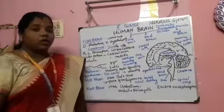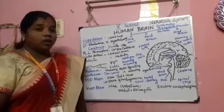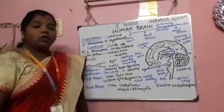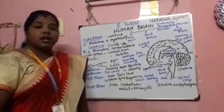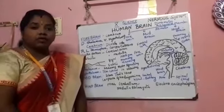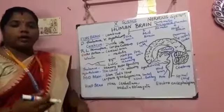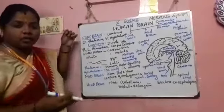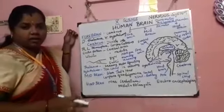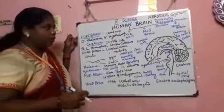In the last video, we saw about the neuron. Neuron is the structural and functional unit of nerve systems. The structure of neuron — dendrite, axon, cytone, etc. — we saw about that.